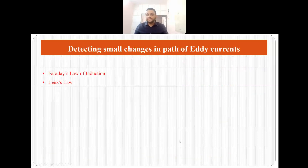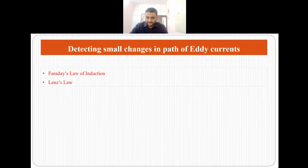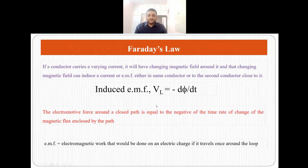Now how do we detect such small changes in the path of eddy currents? We detect it with the help of two laws: one is Faraday's law of induction and another is Lenz's law of induction. Faraday's law of induction: suppose you have a conductor which has a varying or alternating current. Since this conductor has a varying current, it will have a changing magnetic field, and this changing magnetic field will induce EMF in either the same conductor or in a second conductor which is close to it.